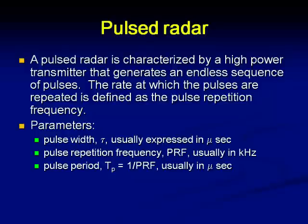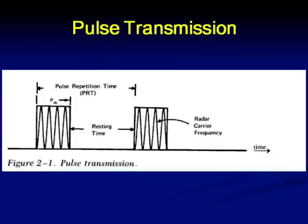Pulsed radar is characterized by a high power transmitter that generates an endless sequence of pulses. The rate at which the pulses are repeated is defined as pulse repetition frequency. Other parameters include pulse width — usually expressed in microseconds — pulse repetition frequency, normally in kilohertz, and the pulse period, which is the reciprocal of pulse repetition frequency, hence in microseconds. The pulse is kept on a carrier of very high frequency, known as the radar carrier frequency. From the diagram, you can also see what the pulse repetition time and the resting time are.